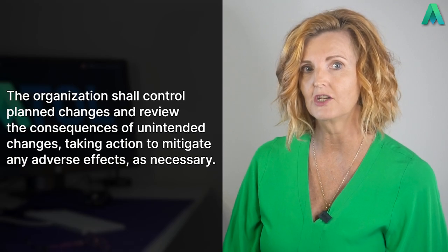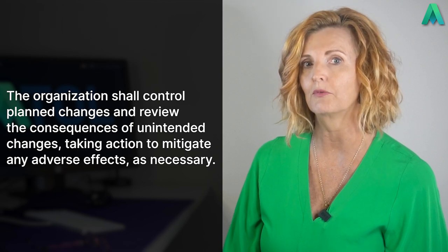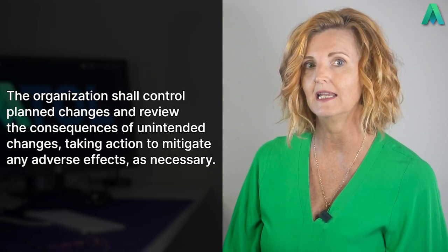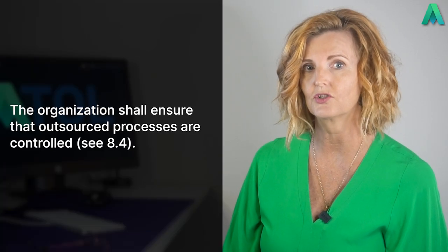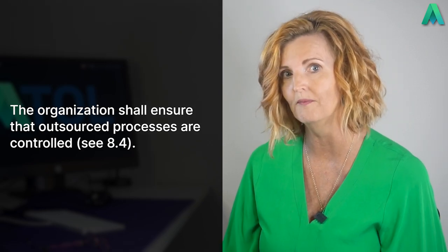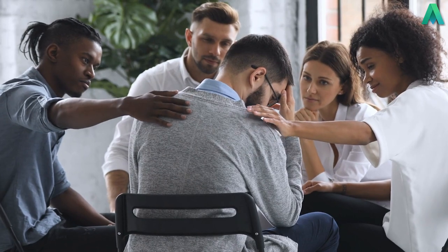This clause has a couple of final sentences. The organization shall control planned changes and review the consequences of unintended changes, taking action to mitigate any adverse effects as necessary. Things don't always go as planned — you can have a project management plan or a job pack, whatever is relevant for the type of work you're doing. But things can change: whether they are controlled changes, such as the customer requesting something different, or unintended changes, such as a non-conformance being identified.